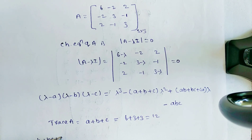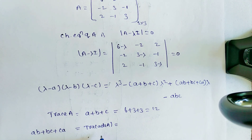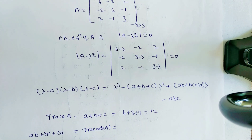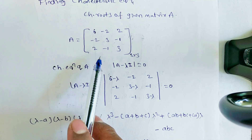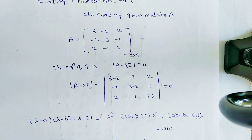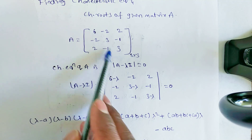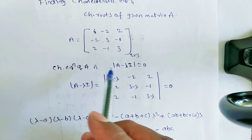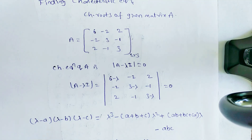AB+BC+CA is equal to the trace of adjoint A. So first we need to find adjoint A and then its trace. You don't need the full adjoint A — only the trace values. Find the diagonal cofactors: for position (1,1): 3×3 - (-1)×(-1) = 9 - 1 = 8. For position (2,2): 6×3 - 2×2 = 18 - 4 = 14.